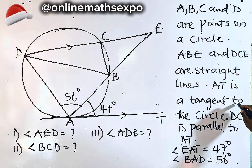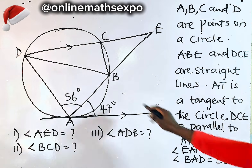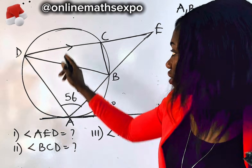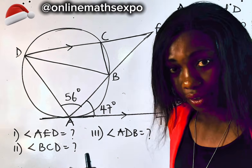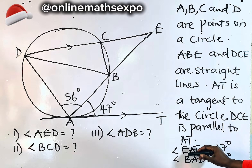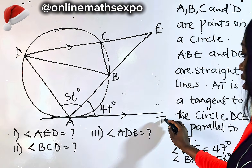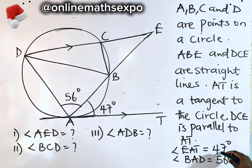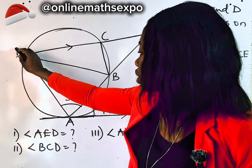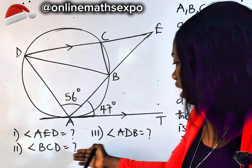We are also told that DCE is parallel to AT. This line is parallel to this — you can see the parallel symbol in the diagram. Whenever you see this symbol in geometry, it shows parallel lines. We are also told that angle EAT is 47 degrees — that is the angle formed at A. And finally, angle BAD is 56 degrees. Now the question is asking you to find these angles.